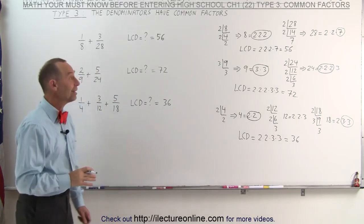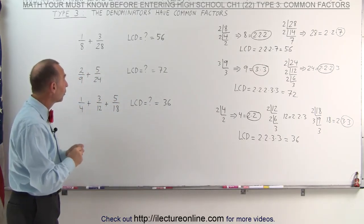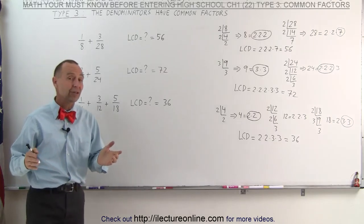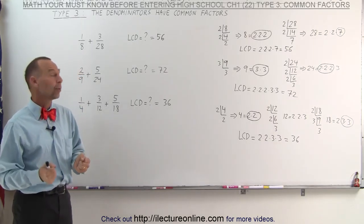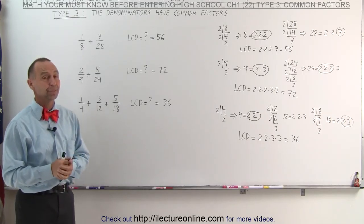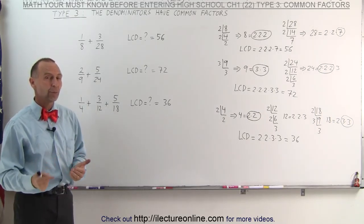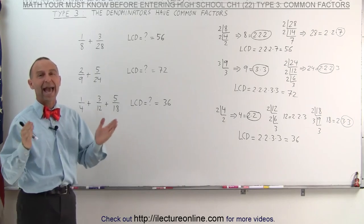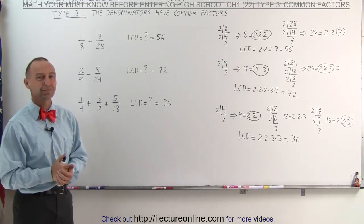And that's the easy technique to find the lowest common denominator. Whenever you get a set of fractions and you're asked to add them together, the first step you always need to do is find the lowest common denominator. Now that we know how to do that, we're going to show you some examples of how to actually add the fractions together. And that's how it's done.